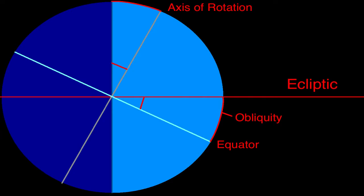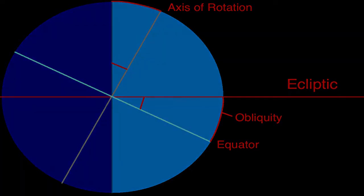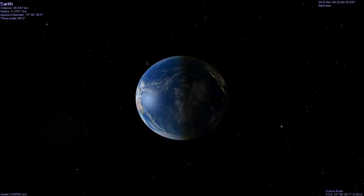The angle a planet tilts away from the ecliptic is known as the obliquity of the ecliptic. Earth's obliquity is currently 23.4 degrees.